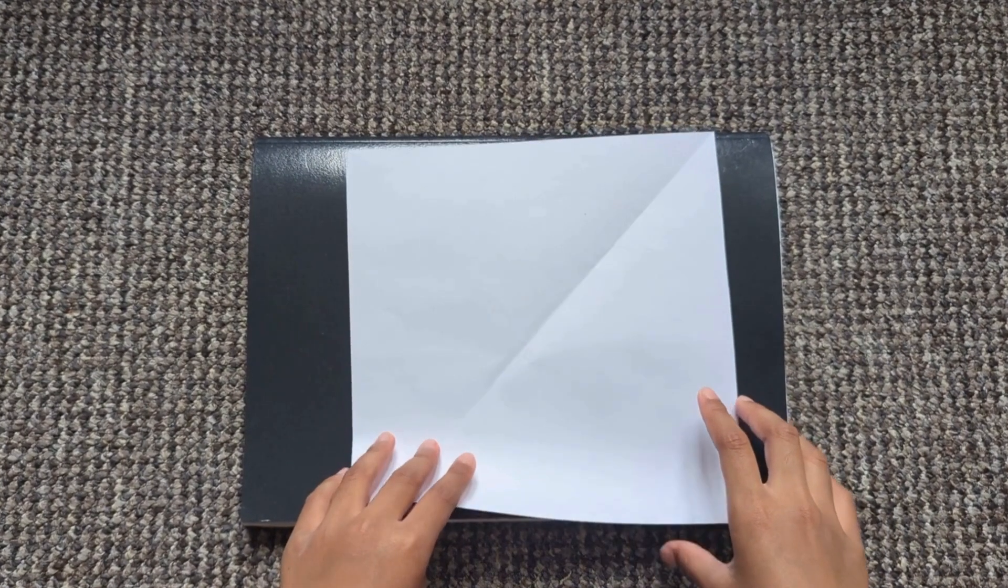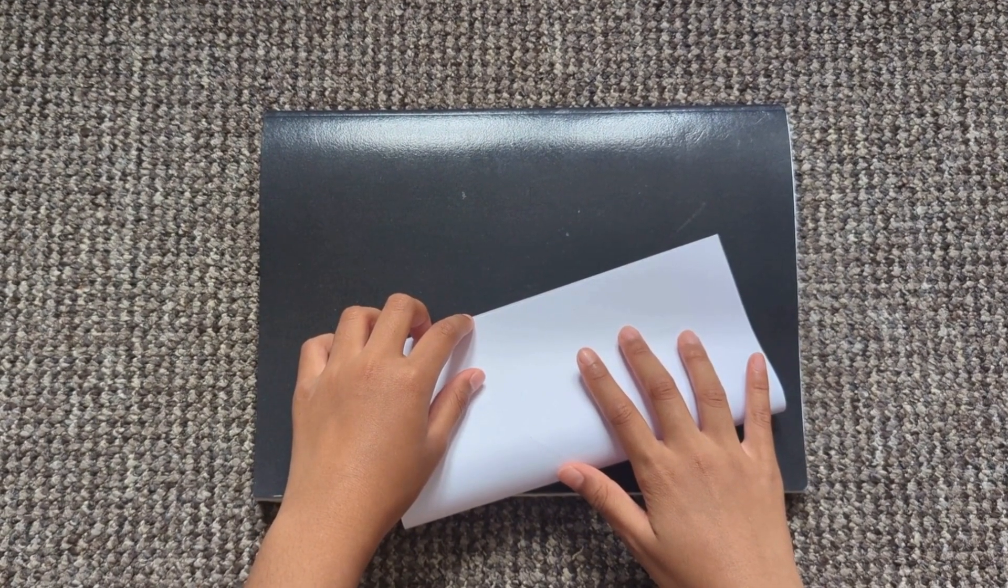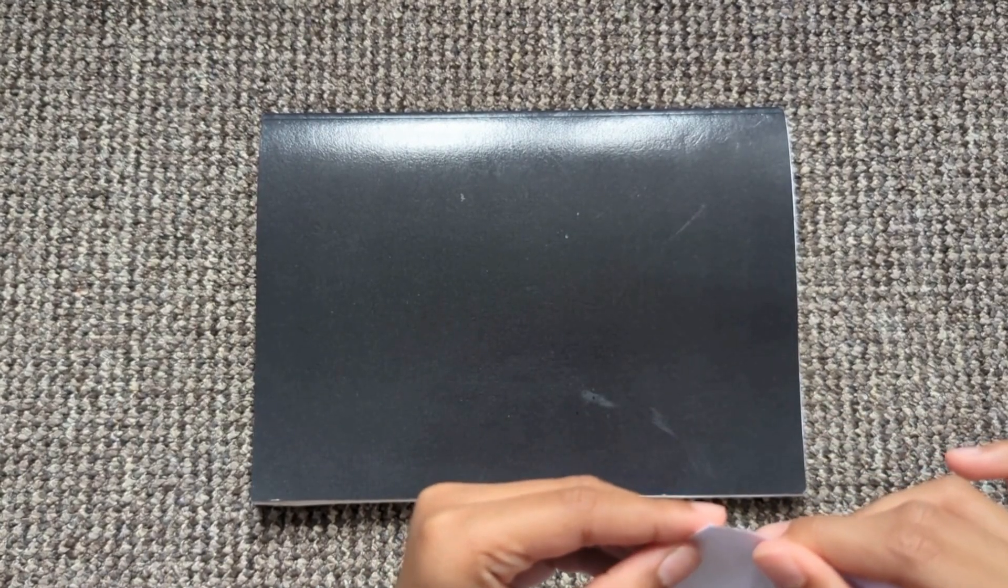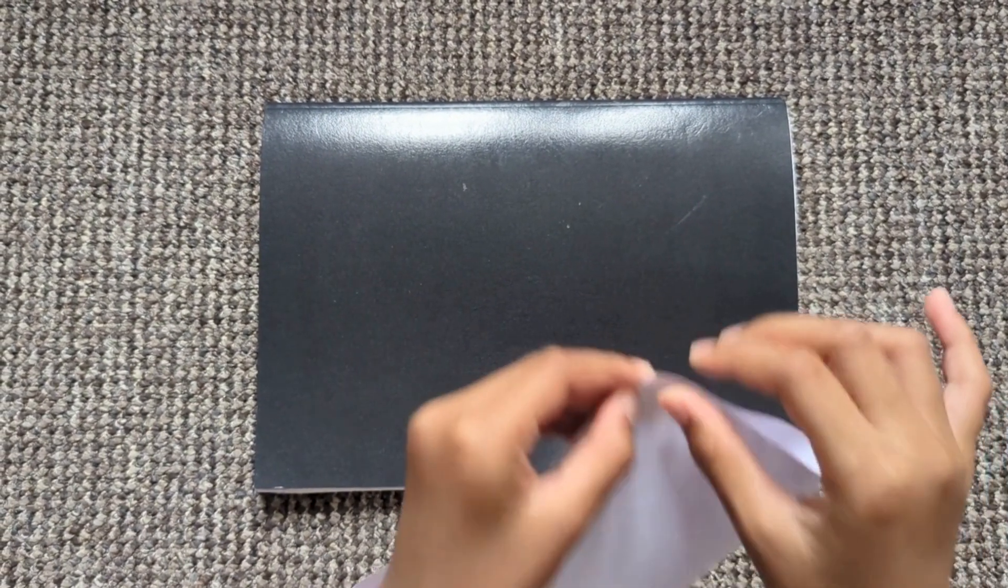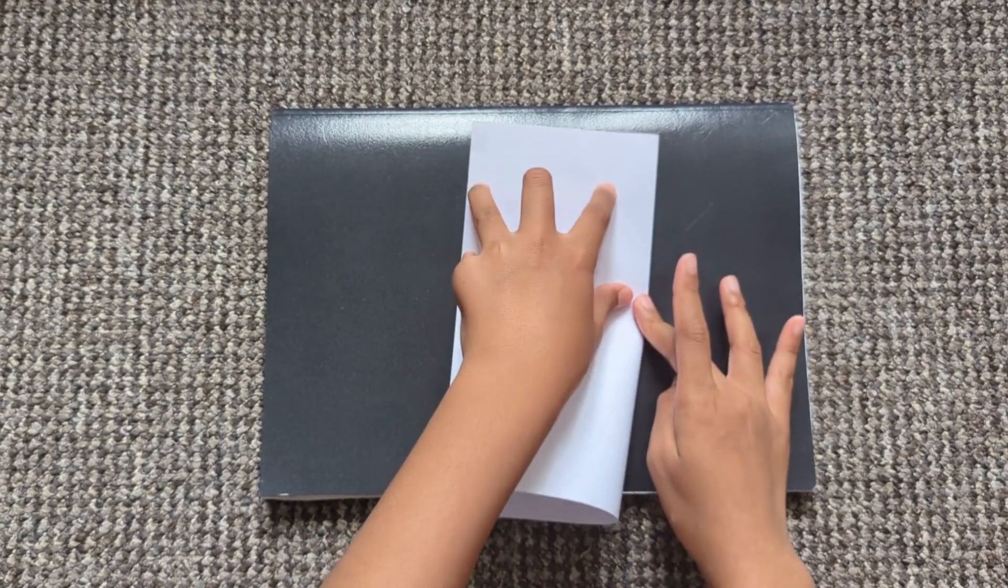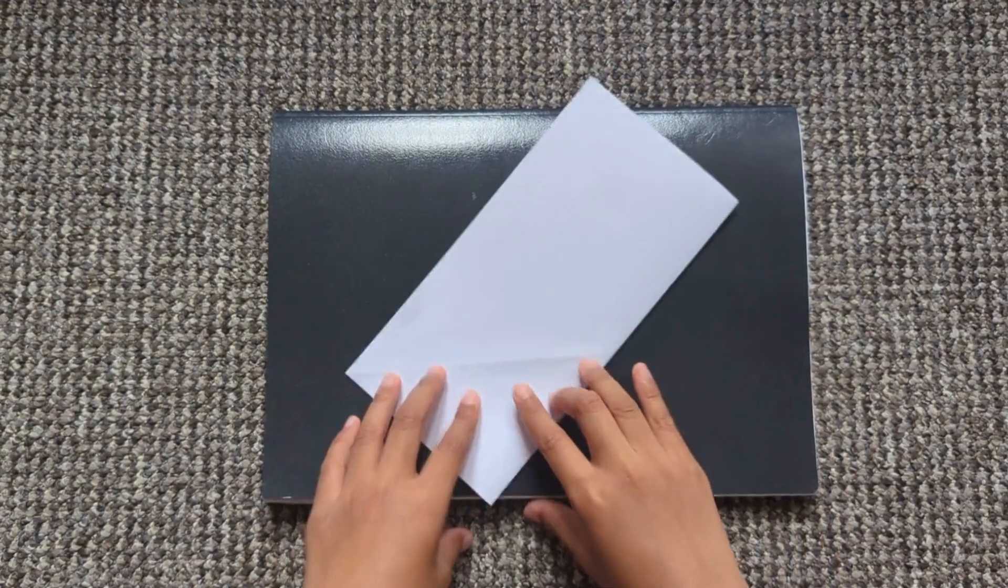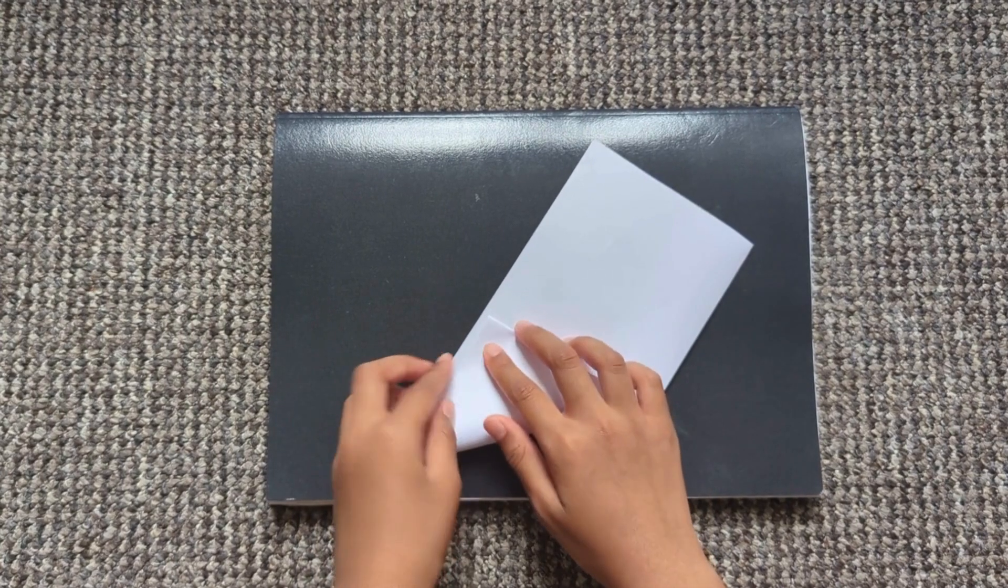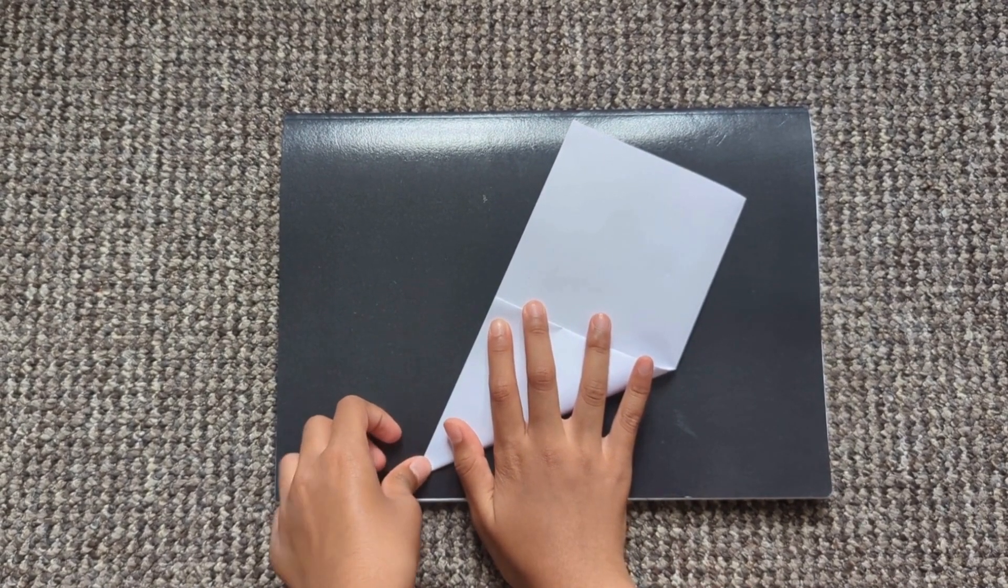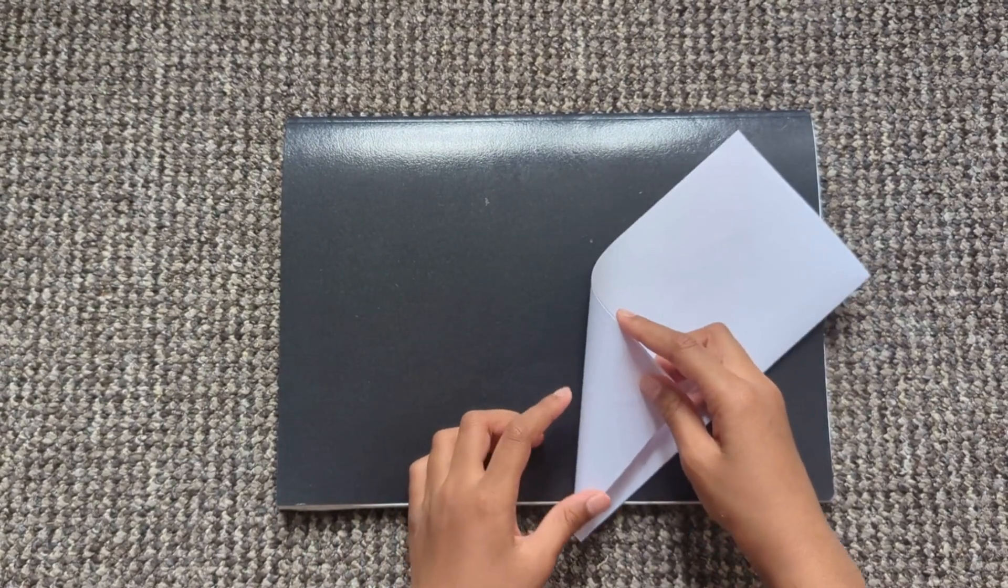So first you need a square piece of paper and then fold it in half like this. And then after that, fold it diagonally so you make a triangle. Do it both ways, so do it again like this.